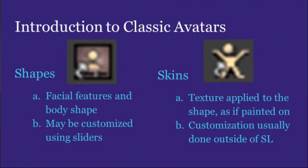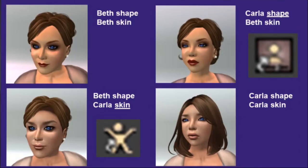In this presentation, classic avatars and clothing are defined as any non-mesh avatars and clothing. Shapes and skins work together to make the basic avatar body. This slide shows the difference between shape and skin and how they work together to create an avatar. The Carla shape and skin are from the Linden Lab library in Second Life. If you go to the VWBPE conference or to my shop in Second Life, I have a whole panel that shows all of the different combinations.